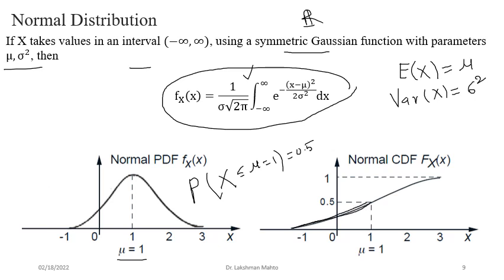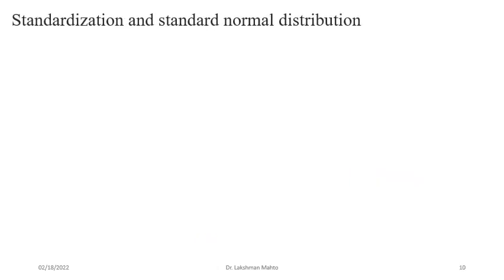Regarding the CDF of normal distribution: up to the mean position it has concavity up, and after the mean position the concavity is down, because the CDF must be asymptotic to y=1. Due to this down concavity it is asymptotic to one. This creates the sigmoidal nature of the CDF of normal distribution, which we call the sigmoidal nature.